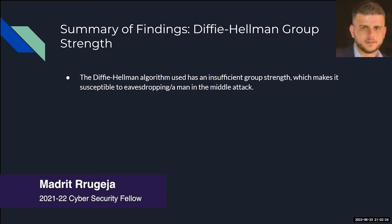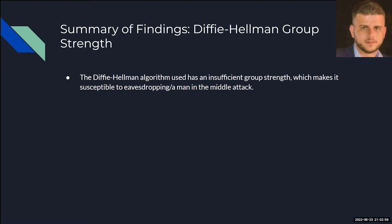When we ran an Nmap vulnerability scan, it showed us that the Diffie-Hellman key exchange had insufficient group strength. The Diffie-Hellman key exchange basically allows two parties who have not previously met to establish secure communication with each other. The security of this depends on the final secret key, which is generated from the parties' public keys combined to generate this final key.